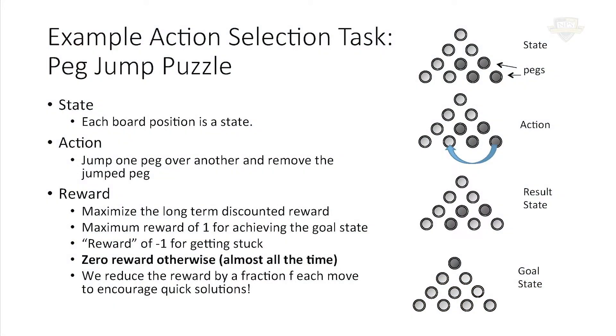Reinforcement learning is a system for learning actions for a system that's going to continuously interact with some kind of environment — it could be a military environment. We'll use a peg jump puzzle because that's easier to draw on a slide. You've all seen this kind of puzzle — the black circles are the pegs, the other ones are empty holes, and there's a goal state: we're trying to get all the pegs off the board and end up with just one at the apex of the triangle. Every time you jump a peg, you remove one from the board.